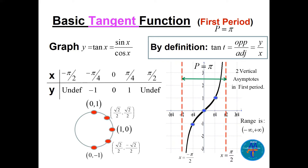Since the function is undefined at pi over 2 and minus pi over 2, there is no graph at those points — we call these vertical asymptotes. There are two vertical asymptotes in the first period from minus pi over 2 to pi over 2. For the middle values: tan(0) = 0 and tan(pi over 4) = 1. You plot these points to draw the graph, shown here in black.